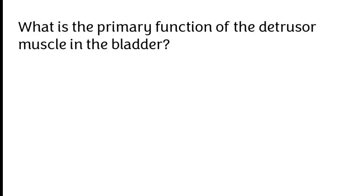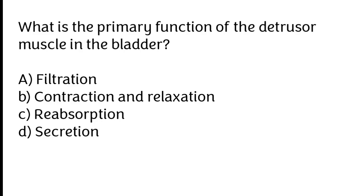What is the primary function of the detrusor muscle in the bladder? A) Filtration, B) contraction and relaxation, C) reabsorption, D) secretion.